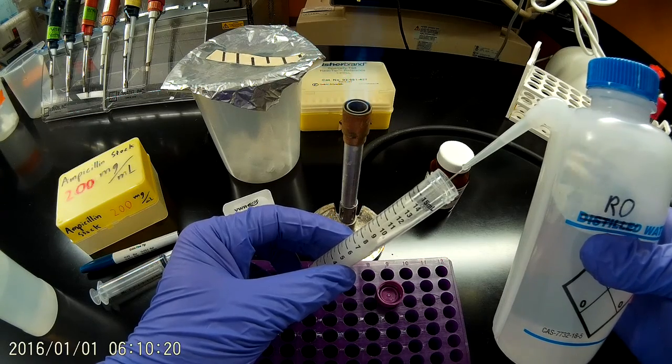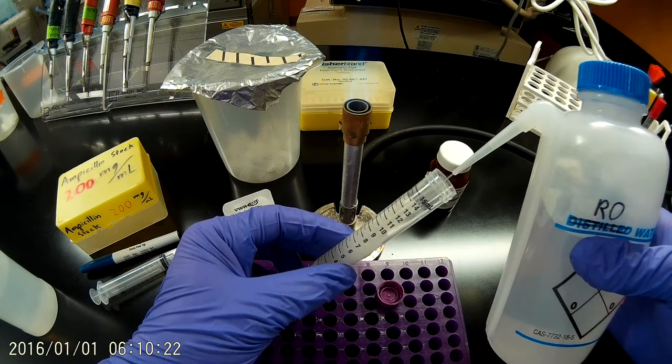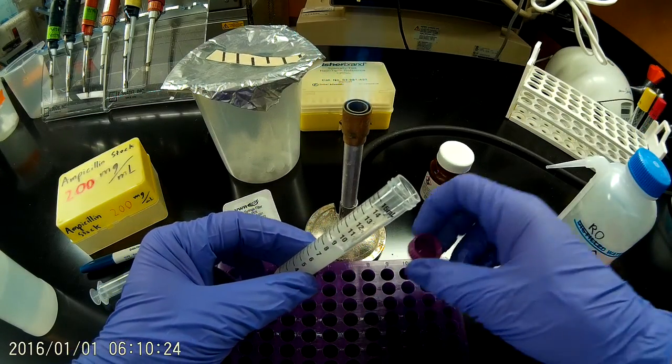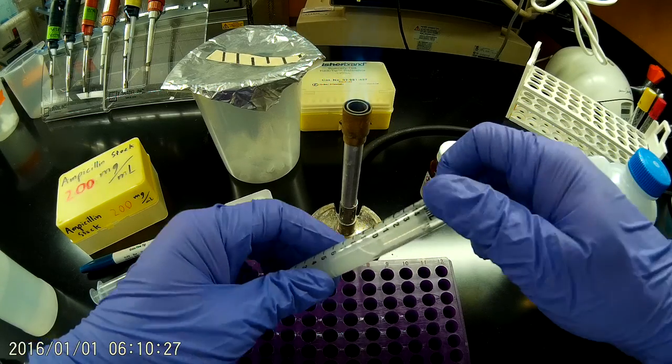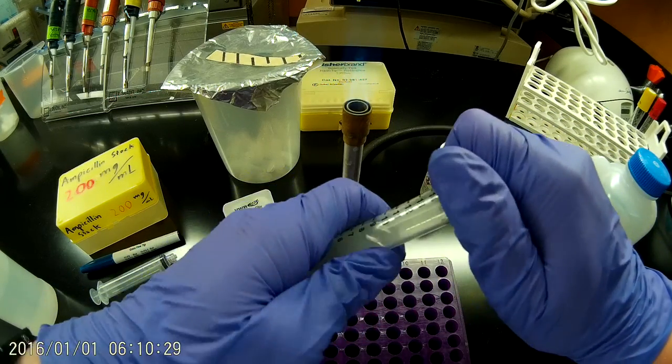So remember, I've measured out 2 grams of ampicillin powder here. To make a 200 milligrams per milliliter solution, I'm going to want to adjust this to a final volume of 10 mils.